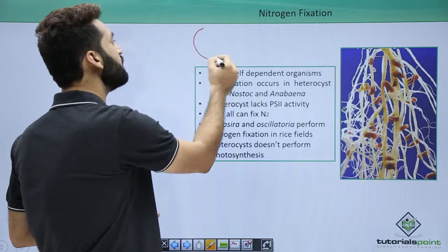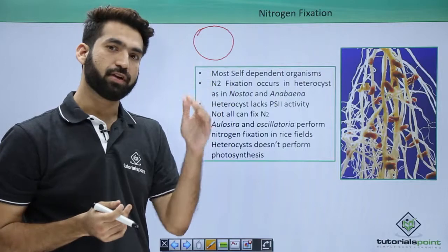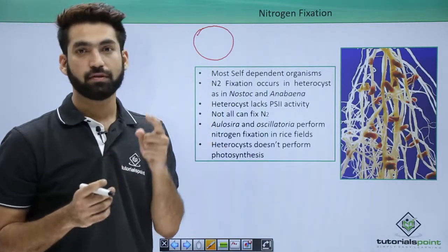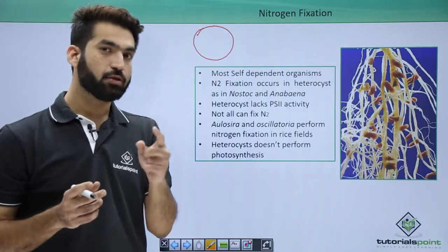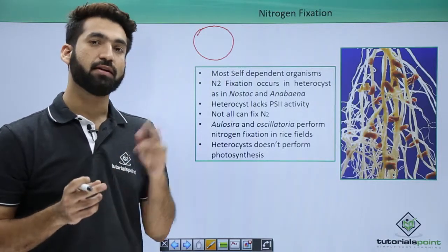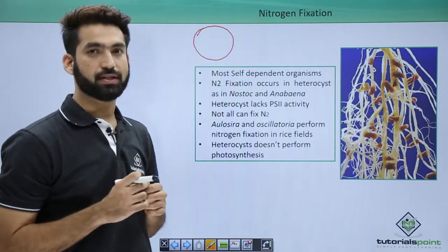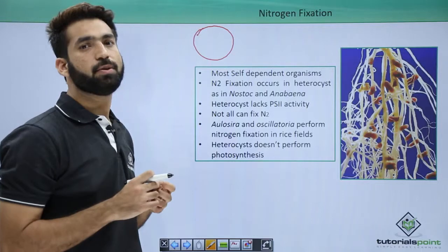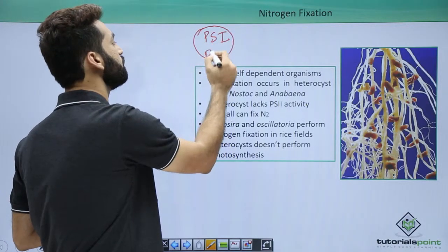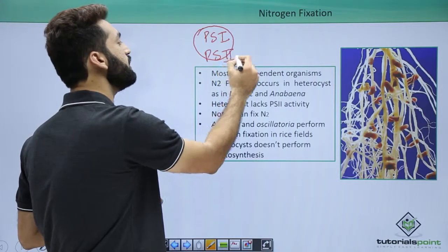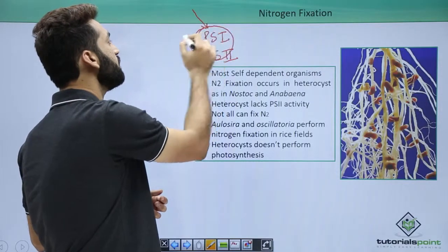When cyanobacteria does photosynthesis, it traps light and converts that light to chemical energy, so that CO2 uses this chemical energy and is converted to glucose. For photosynthesis you require two things: PS1 and PS2 — both are photosystems that trap light.